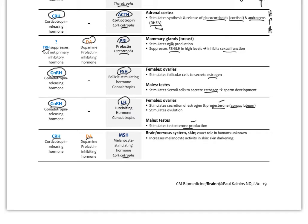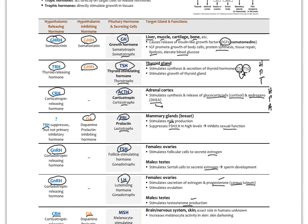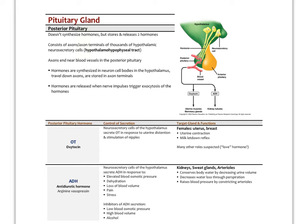The posterior pituitary is simpler. Neurons in the hypothalamus project directly down the infundibulum and synapse onto the portal system, releasing their hormones straight into the blood. There are no cell groups in the posterior pituitary that release their own hormones. The two main posterior pituitary hormones are oxytocin and antidiuretic hormone, also known as vasopressin.